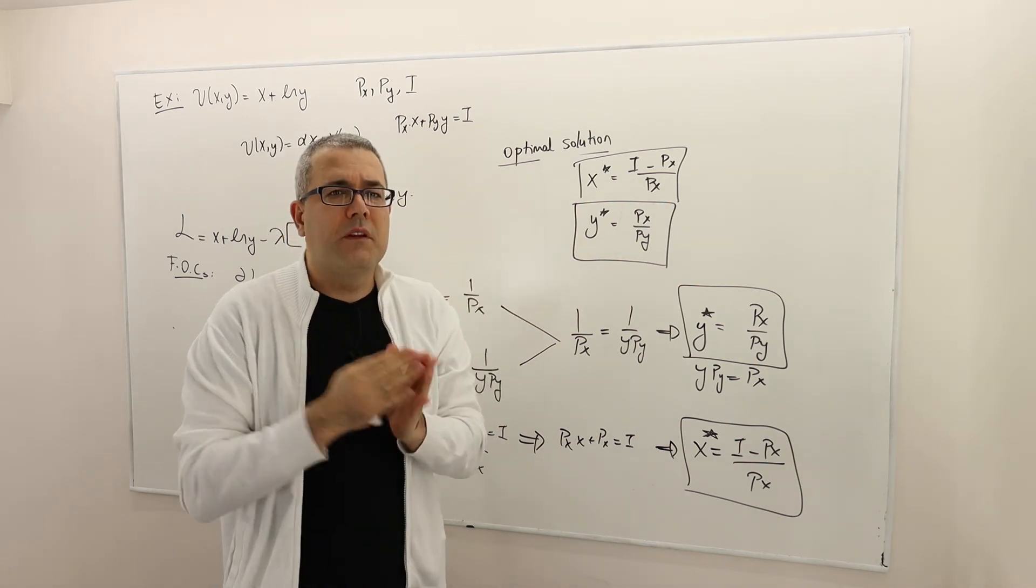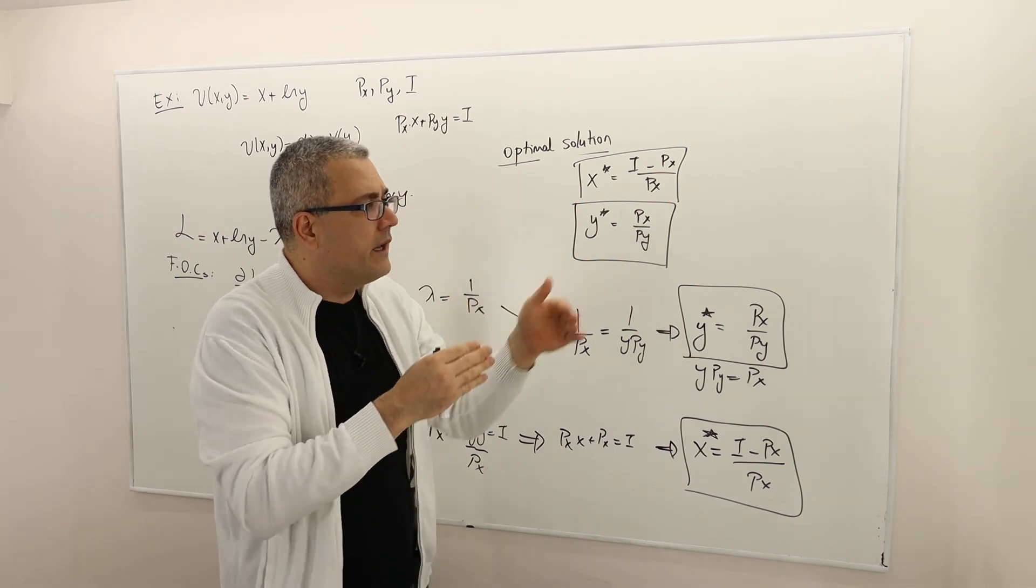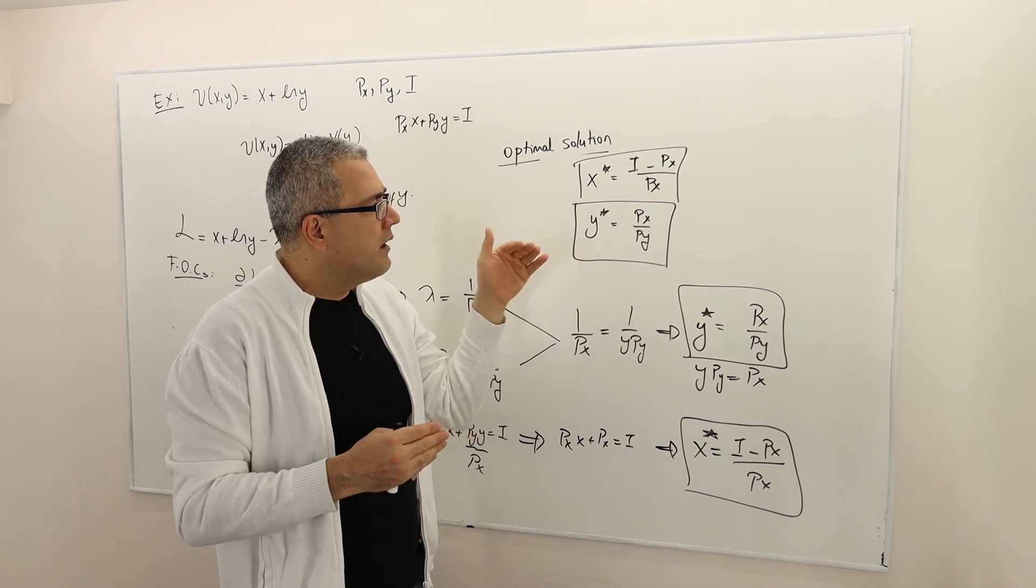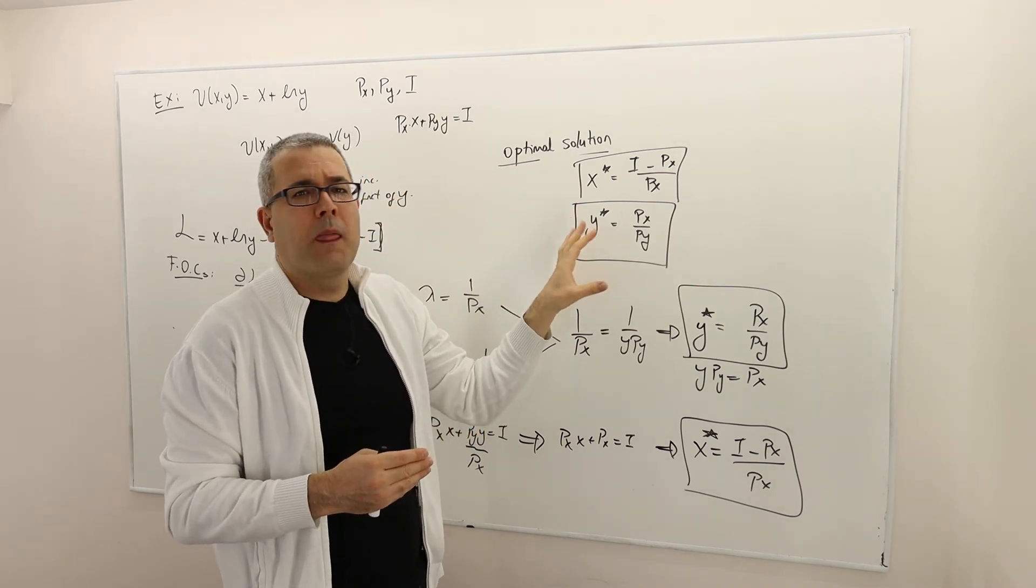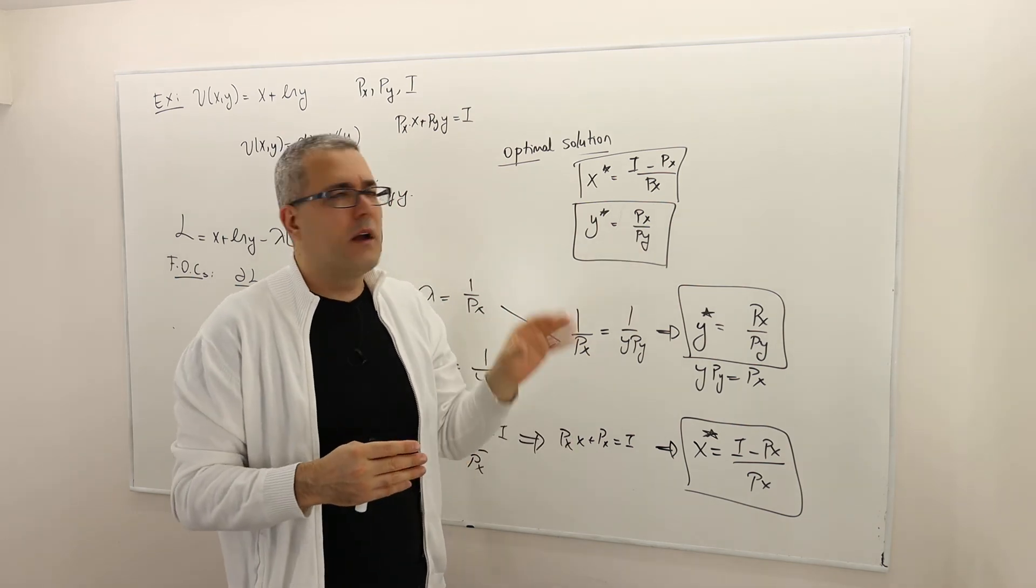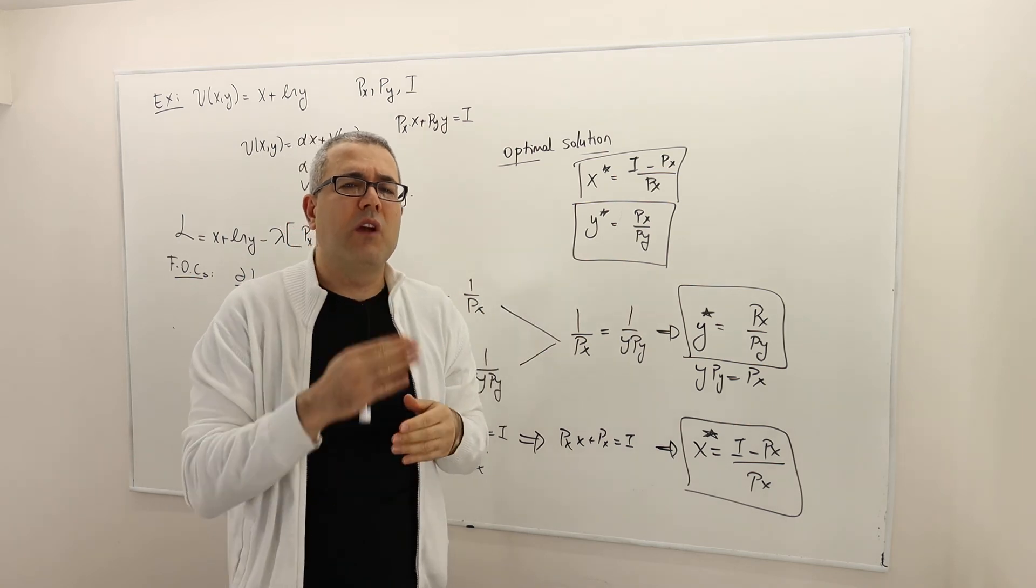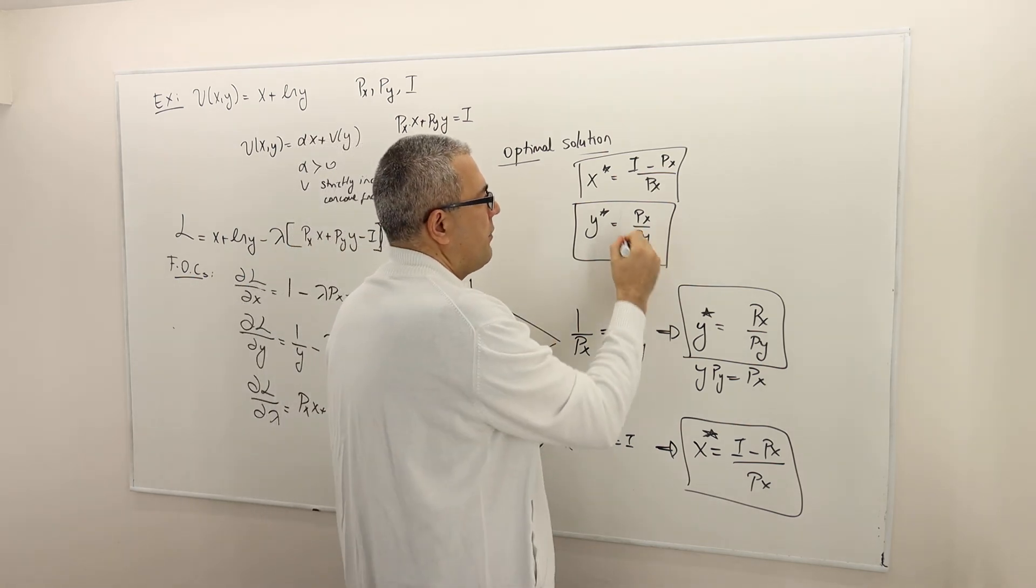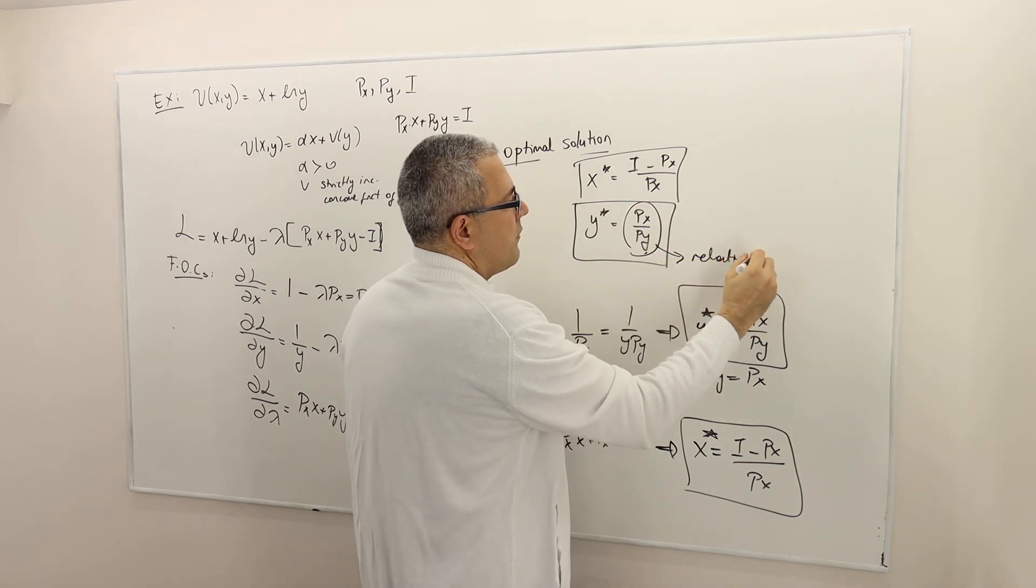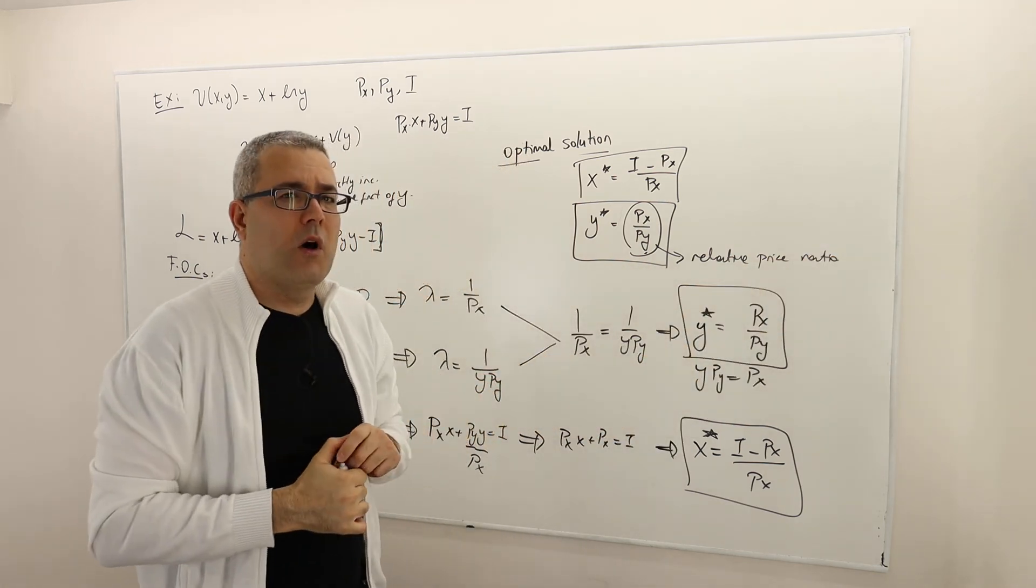the optimal thing for you to do is to spend money on y. How much? Well, a fixed amount. Regardless of the income, you want to buy a fixed amount of y, which is px over py. So the relative price ratio, px over py, is what we call the relative price ratio, and is what matters to determine the optimal y level.